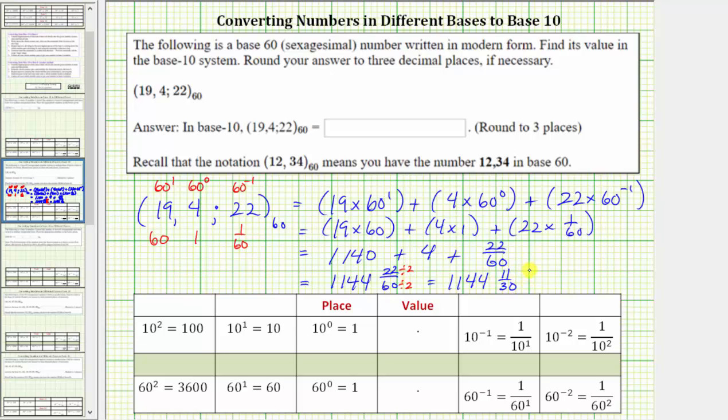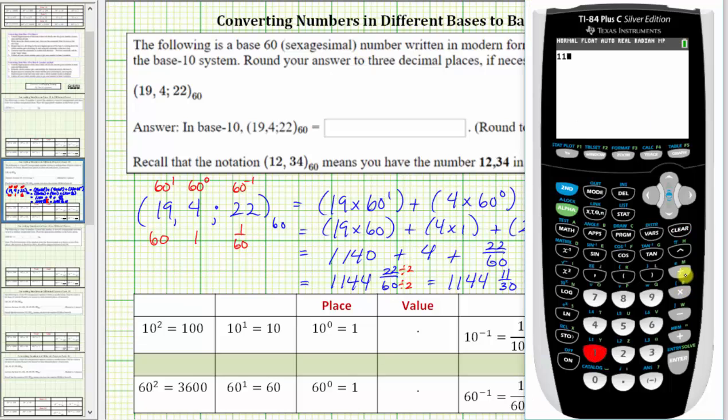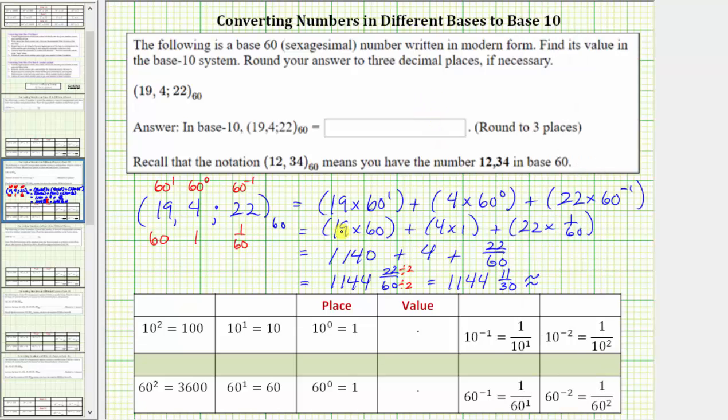But this question does ask for a decimal, rounded to three decimal places. Now we'll find a decimal approximation. To do this, we'll convert 11-thirtieths to a decimal and round to three decimal places. 11 divided by 30 is approximately 0.367 rounded to three decimal places, which means this is approximately 1,144.367 in base 10.